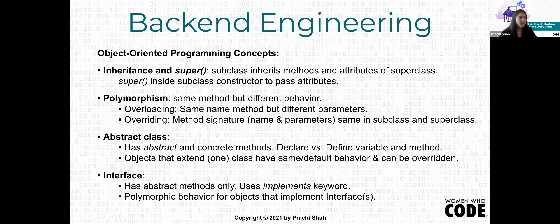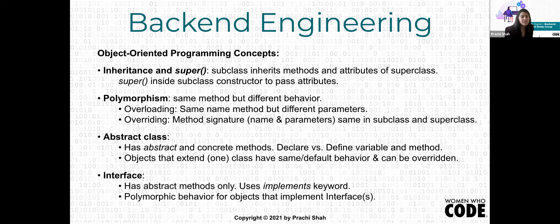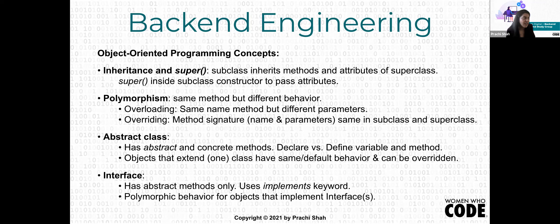With inheritance, we have a subclass and a superclass. The subclass or child class inherits the attributes and methods of the superclass or parent class. For example, Fruit can be the superclass with properties like color, taste, and lifespan. Then Mango or Apple can be subclasses that have all the properties of Fruit plus some additional properties. Every subclass is a superclass and therefore derives all the attributes and methods of the parent class.